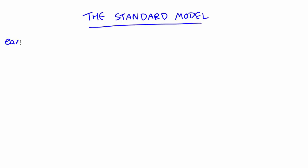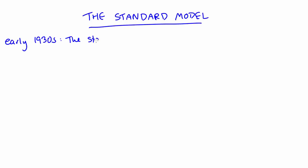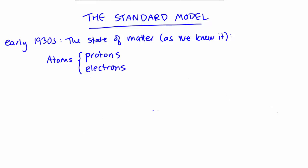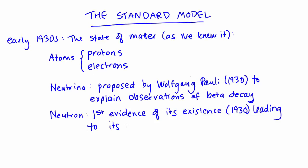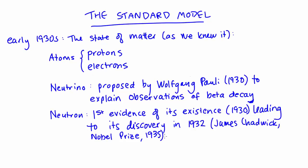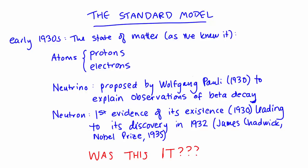To begin learning about the Standard Model, we're going to go back in time to the early 1930s, when we thought we knew a lot about the basic building blocks of matter. We knew about protons and electrons, Pauli had proposed the existence of a neutrino, and the first evidence that would lead to the discovery of the neutron had already been gathered. For a while, some physicists even thought that was the extent of it — that we knew all we needed to know about what the universe was made of, and that the only work left to do was to further refine our current understandings.